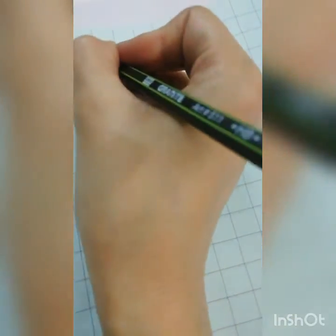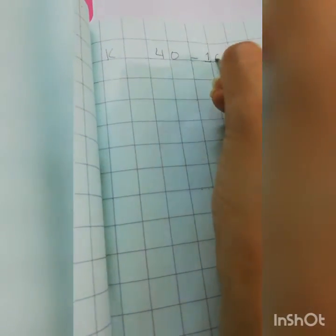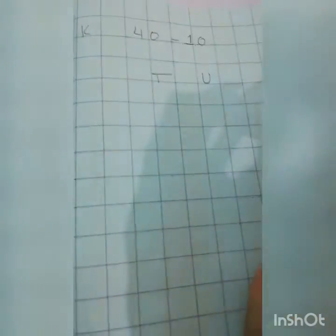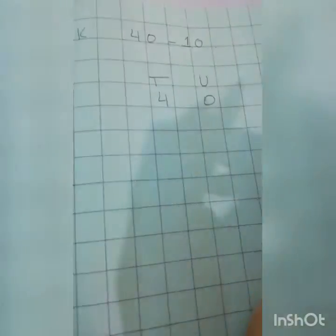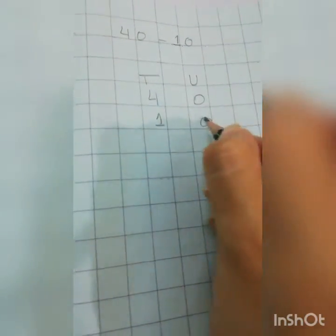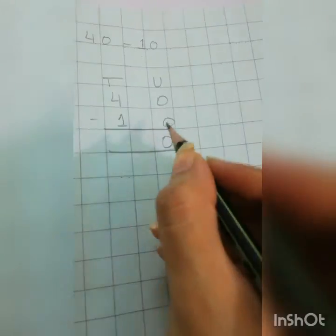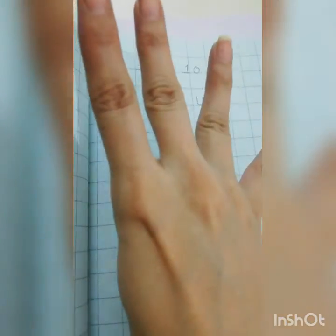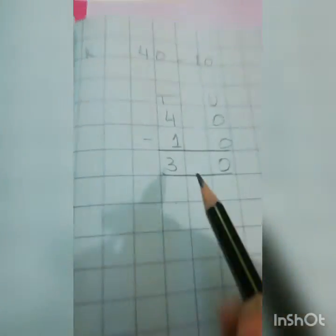Now see sum K: take away 1 ten from 4 tens. 4 is bigger, it will come up; 1 is small, it will come down. 10s and units: 0 minus 0 is 0. And 4 minus 1: draw 4 lines, minus 1, remaining is 3. So the answer is 30.